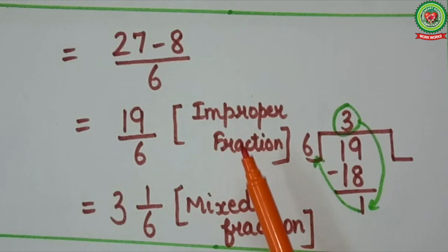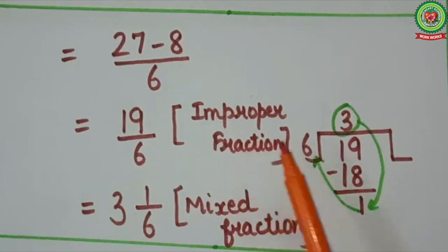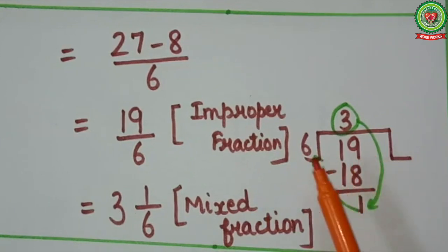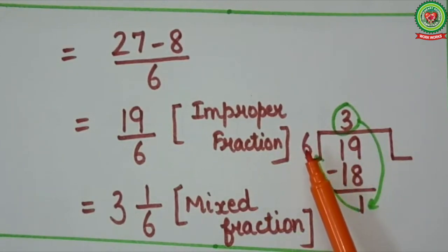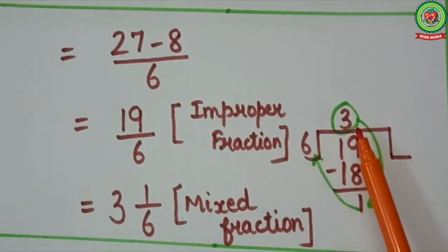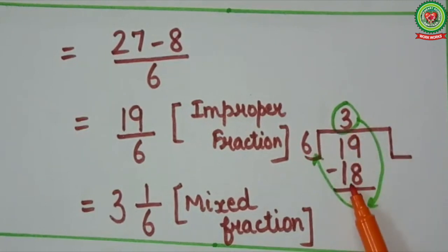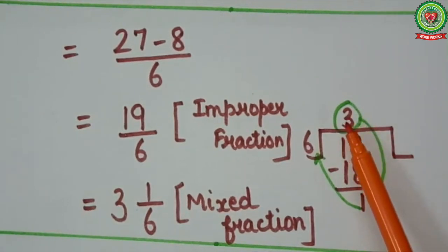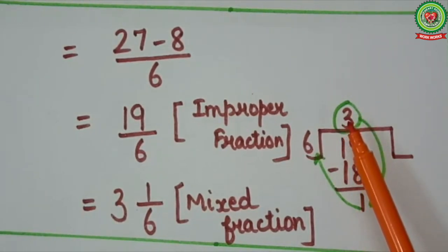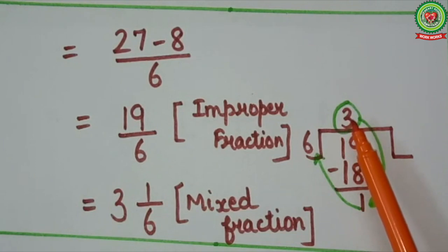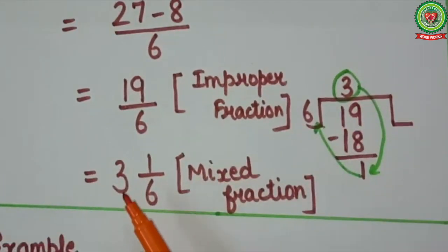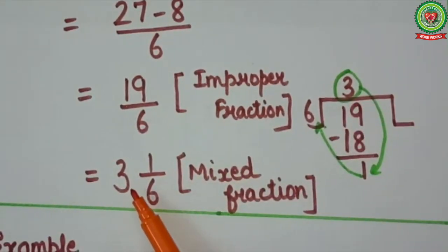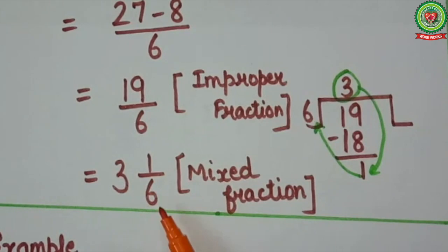An improper fraction we will change into a mixed fraction. Divide 19 by 6. It will come on 3 — 6 threes are 18 — remainder is 1. Start from the quotient: quotient equals the whole number. So we will write 3 whole number 1 upon 6.